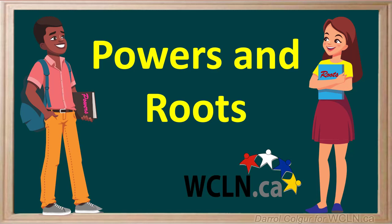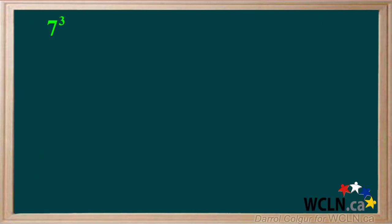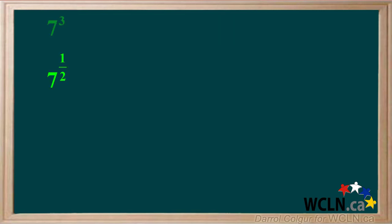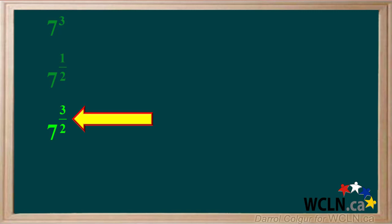You're familiar with exponents, or powers and roots. Let's put powers and roots together. Here is 7 with an exponent of 3, which means 7 to the power 3. And here is 7 with an exponent of 1 half — remember, this means the square root of 7. We'll combine the 3 and the 1 half to give 7 with an exponent of 3 over 2.